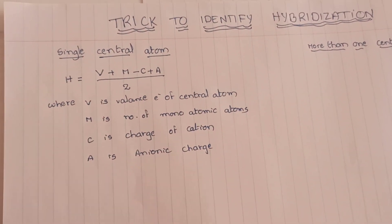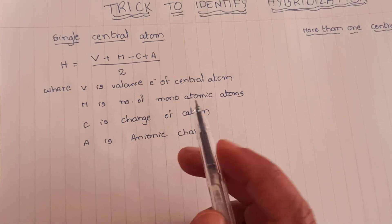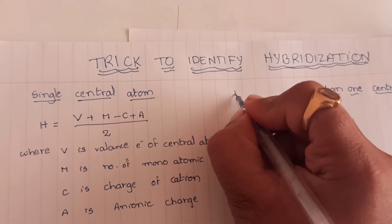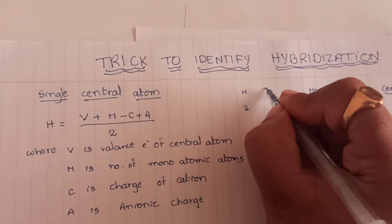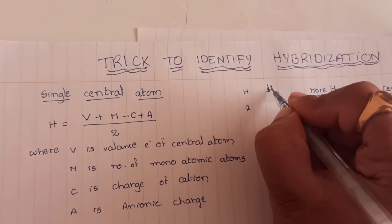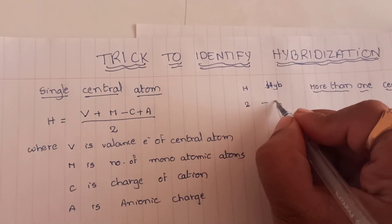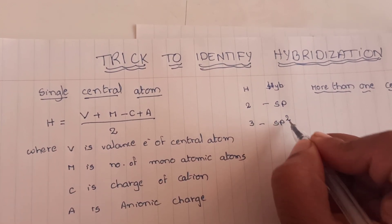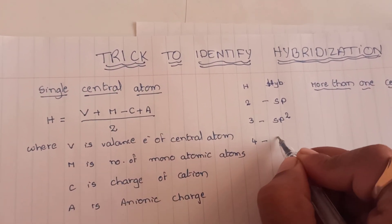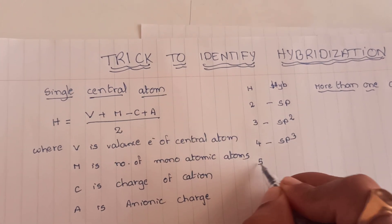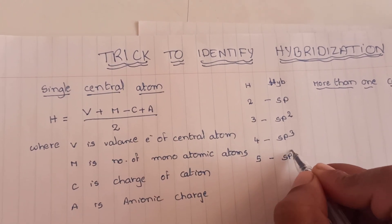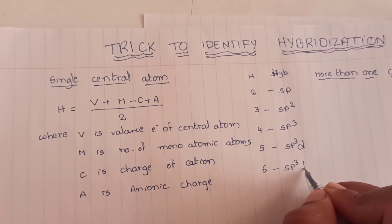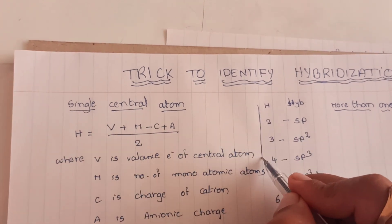If you know V, M, C, and A: if the hybridization number is 2 then hybridization type is SP; if it is 3 then SP2; if it is 4 then SP3; if it is 5 then SP3D; if it is 6 then SP3D2.